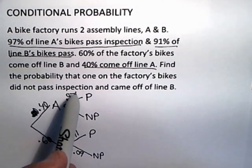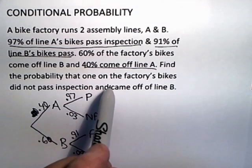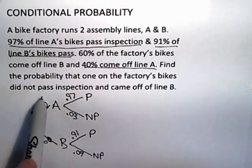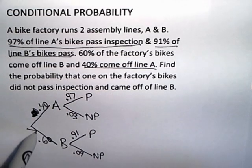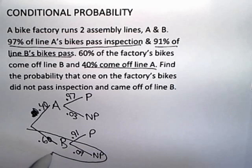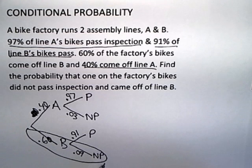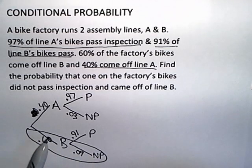I want to know the probability that one of the bikes, one of the factory's bikes, did not pass inspection and it came off line B. So that would be this branch. We've been working these problems and you remember that using this tree diagram approach, when you are looking for an AND, you multiply down the branches. So the AND is an illustration of the product rule of probabilities. You multiply along a branch to do an AND.